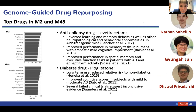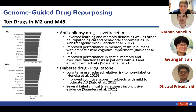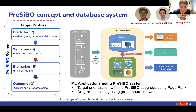Two candidates in particular have emerged: the anti-epilepsy drug levetiracetam, which has been associated with improved memory function in transgenic mice, and the diabetes drug pioglitazone, which is also approved and has been shown to improve cognitive scores in subjects with mild to moderate AD. These have also been a target for further verification in bioinformatics databases.